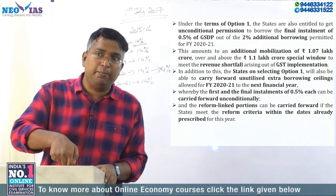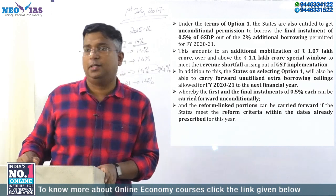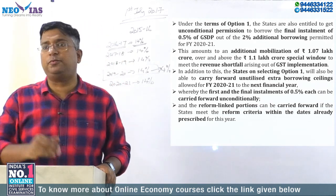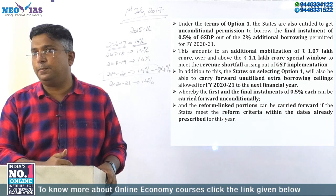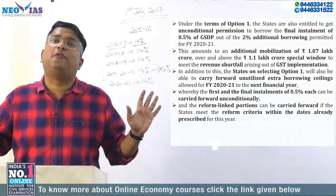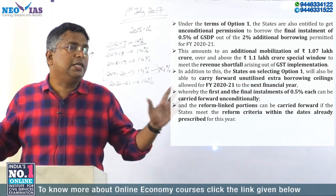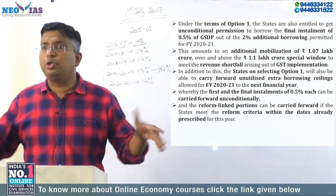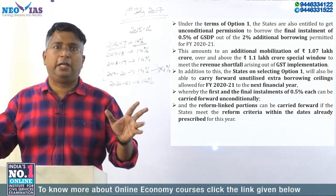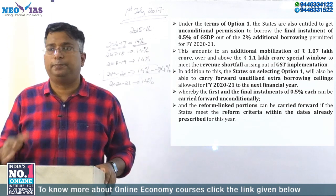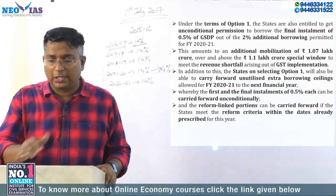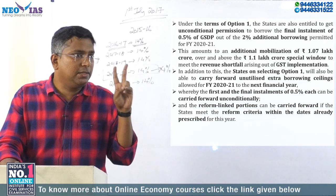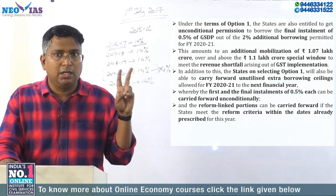This carry-forward of reforms-linked borrowing is only for option one. Option two is not discussed because no states have chosen it. Both options were given to the states. This is the second measure taken by the center to support the states.